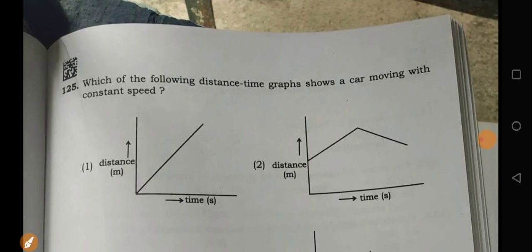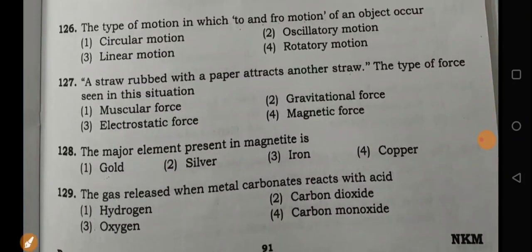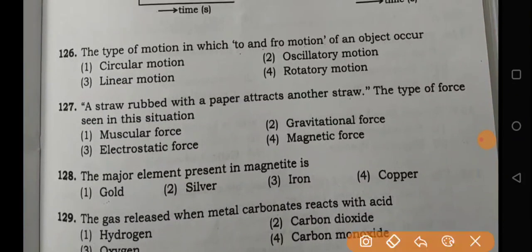Coming to the 125th question, constant speed - option E is the easy answer. Similarly, options 2 and 4 show motion that is actually oscillatory.